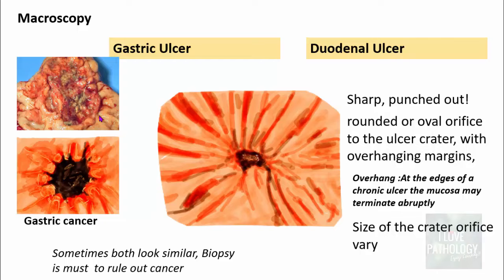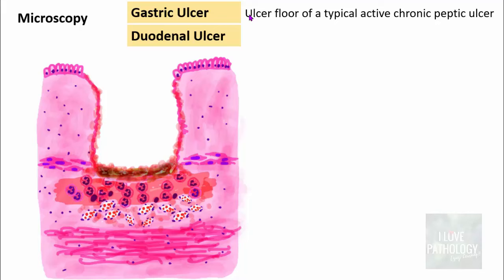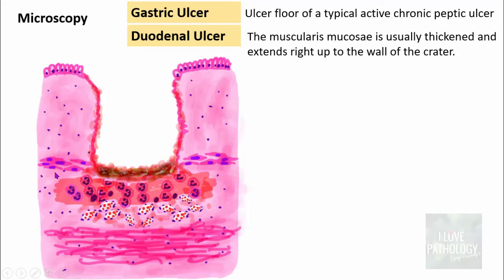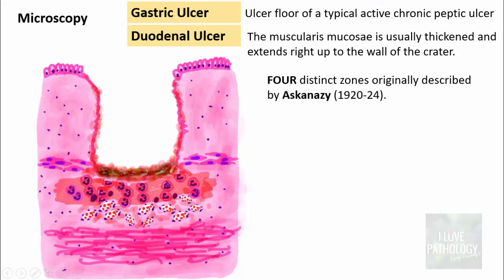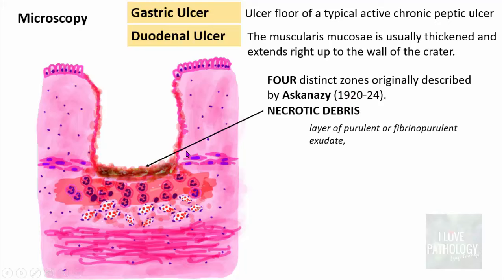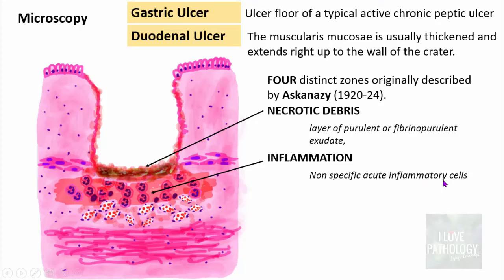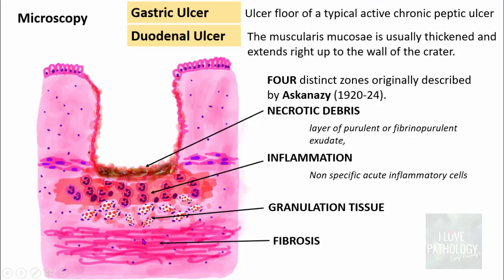In a typical chronic gastric or duodenal ulcer, the muscularis mucosa is thickened and extends to the wall of the crater, which can deepen to the muscularis or even perforate. Classically there are four distinct histological zones, originally described by Askenazy: Zone 1 is necrotic debris with purulent or fibrinopurulent exudate; Zone 2 is an inflammatory zone with non-specific acute inflammatory cells; Zone 3 is granulation tissue; and Zone 4 is a zone of fibrosis.